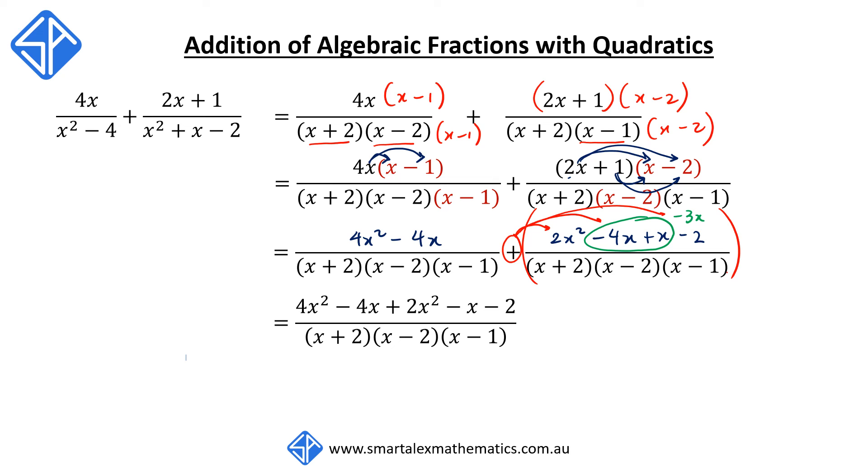Our last step now is to collect like terms. So with the x squared term, we've got 4x squared plus 2x squared. So we're going to get 6x squared. For the x term, we've got minus 4x and minus x. So that's going to combine to give us negative 5x.